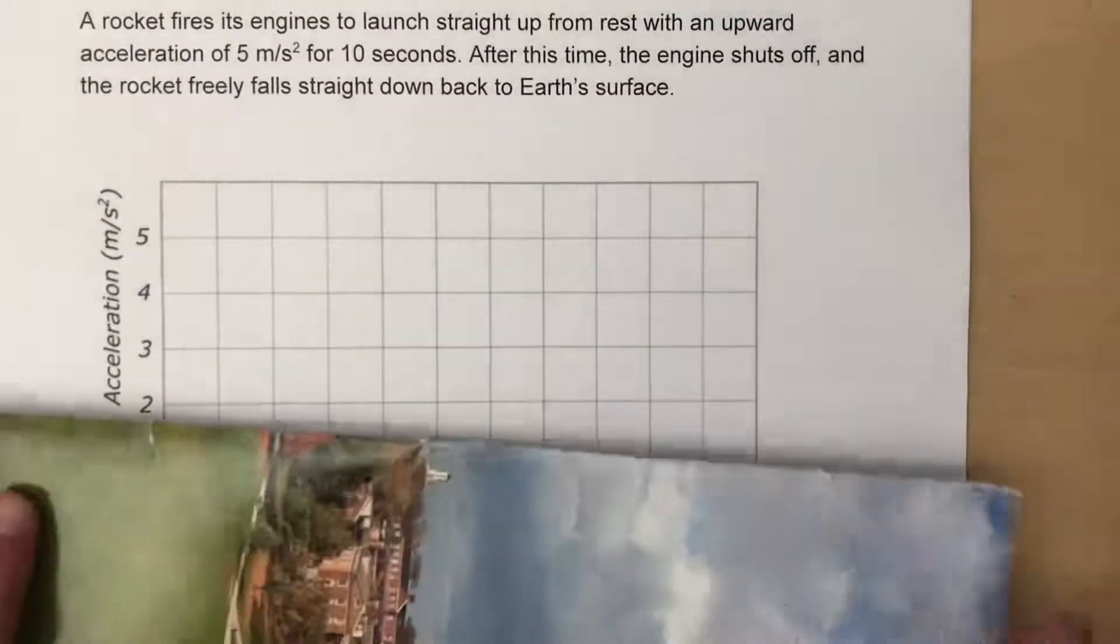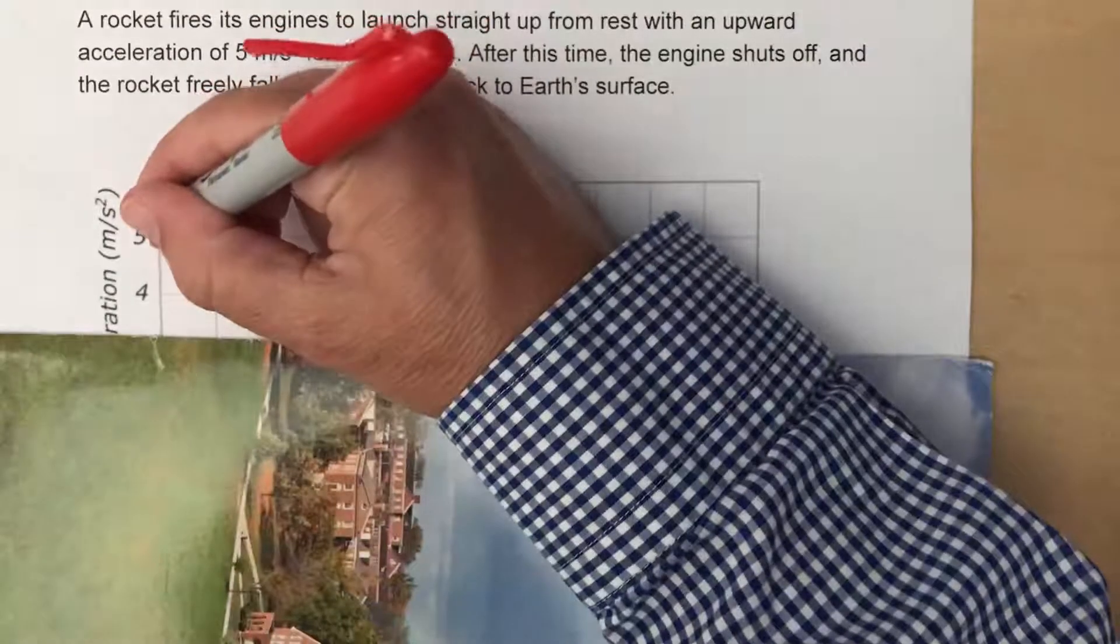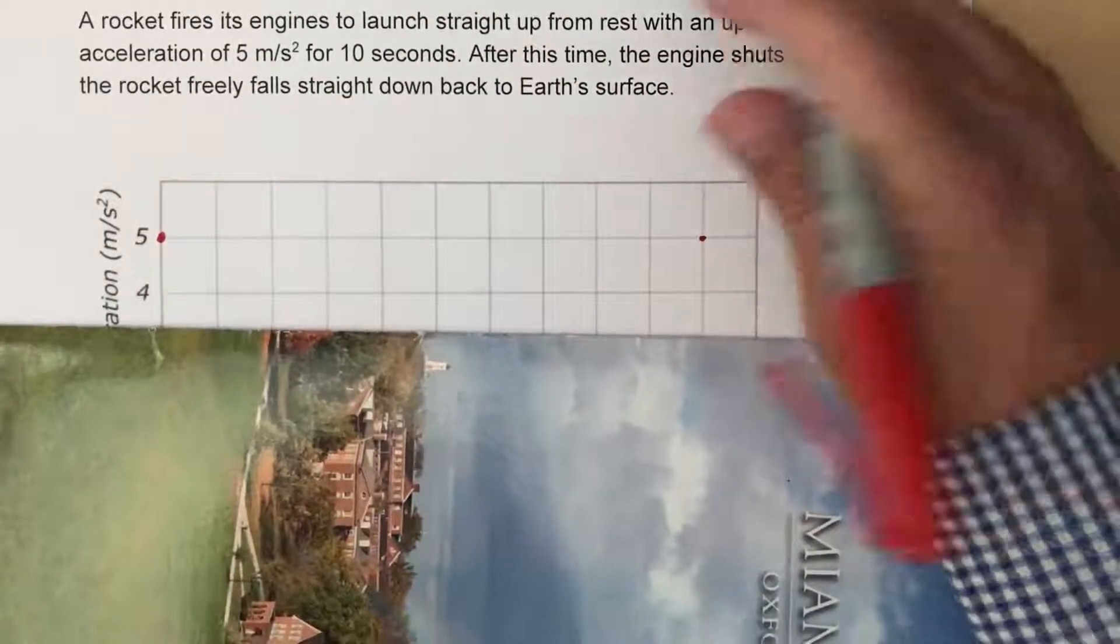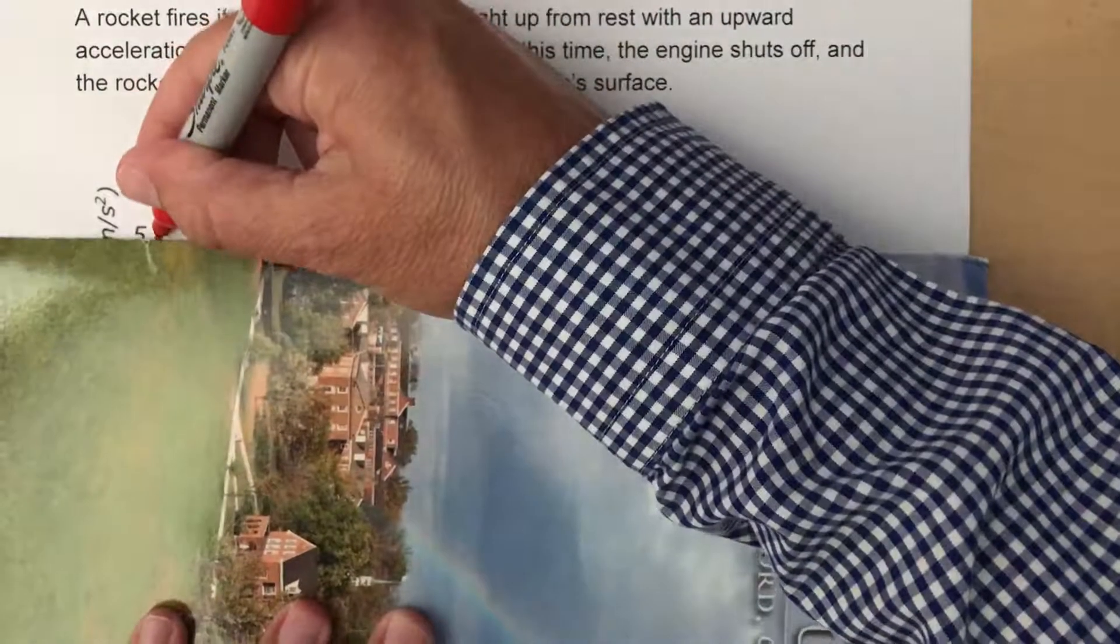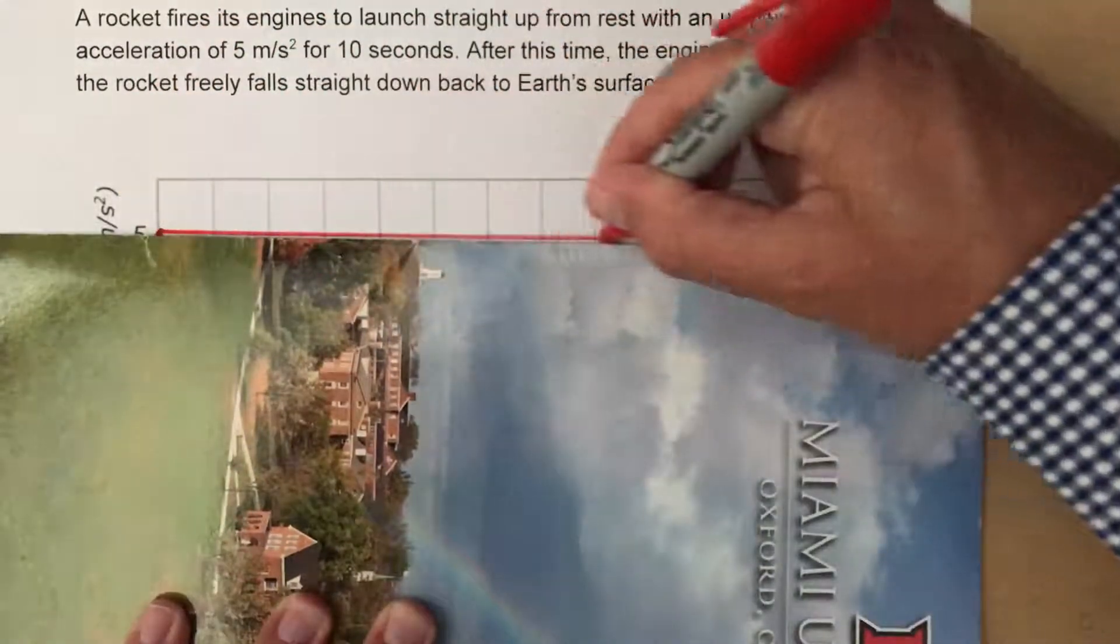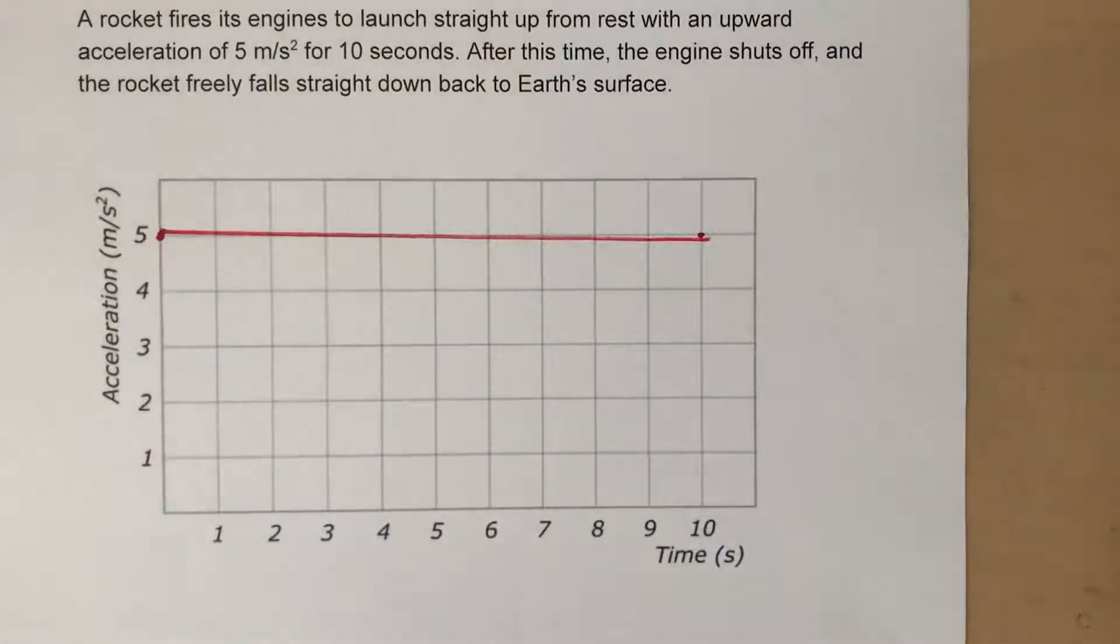I'm just going to use a straight edge here. We start out at 5 and it says it's a constant 5 for 10 seconds. So it's never going to change. You're just going to create a line basically straight across like that. That is all you have for the first one.